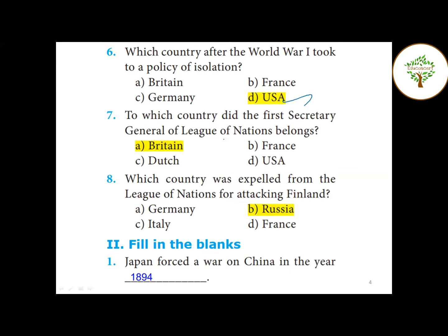Seventh question — to which country did the first Secretary General of the League of Nations belong? The answer is Britain. His name is Sir Eric Drummond, the first Secretary General of the League of Nations. Question number eight — which country was expelled from the League of Nations for attacking Finland? The answer is Russia.